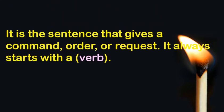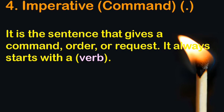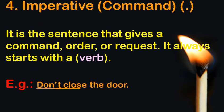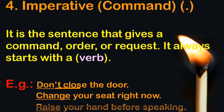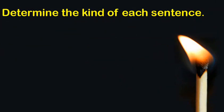Finally, the last type is the imperative sentence, which gives a command, order, or request. Imperative sentences always end with a period, and they always start with a verb. For example: 'Don't close the door,' 'Change your seat right now,' 'Raise your hand before speaking.' They all start with a verb and carry a command or request.